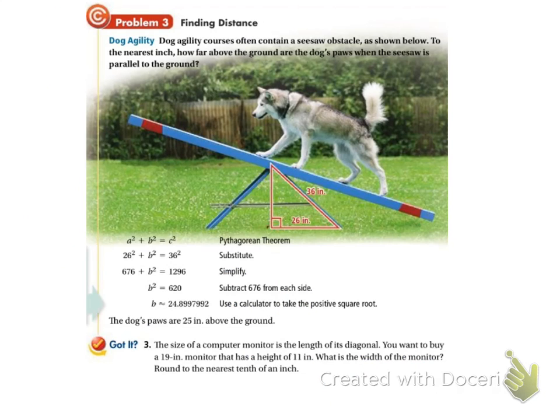Okay, a story problem. Let's just do our got it problem here. The size of a computer monitor is the length of its diagonal. You want to buy, so let's get your picture here. Okay, there's your computer monitor. You want to buy a 19-inch monitor. So they're saying that that 19 is actually the diagonal. So that's 19. That has a height of 11 inches. And we need to figure out what is the width of the monitor. In this case, they say round to the nearest tenth of an inch. So they don't want us to simplify like we did in the last problem. They just want the decimal.